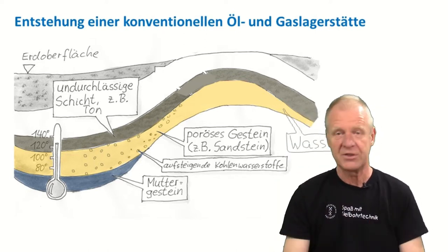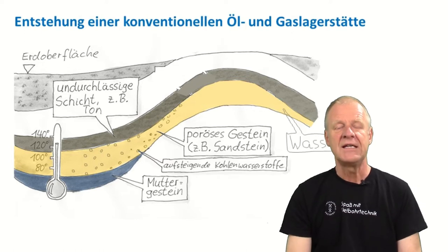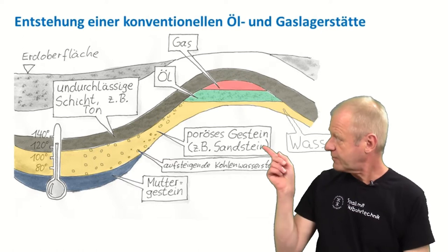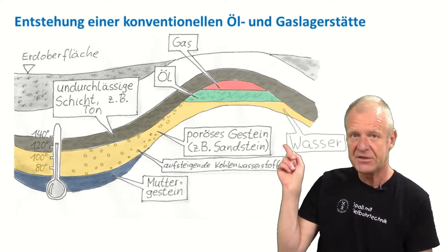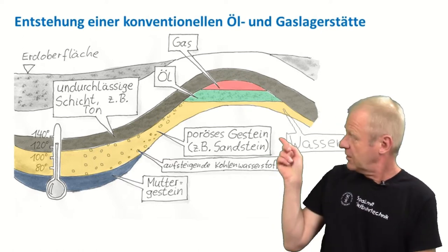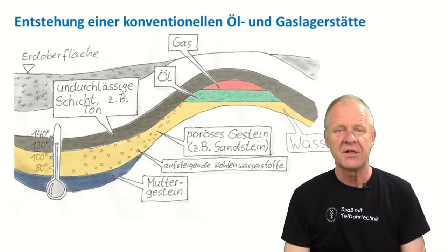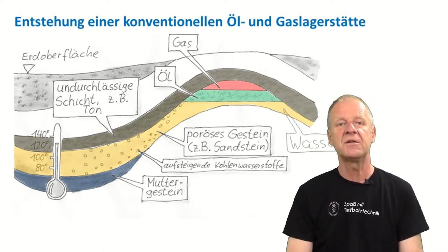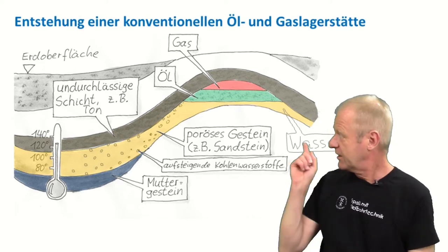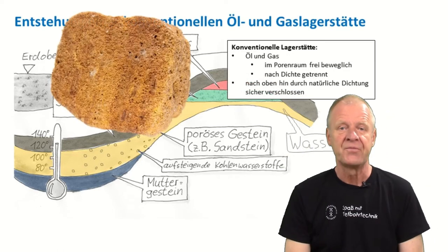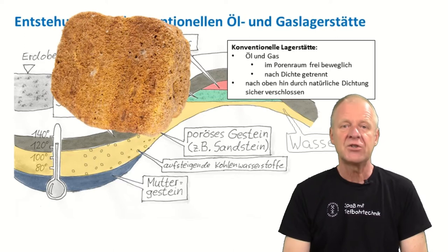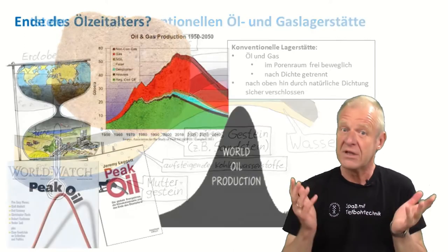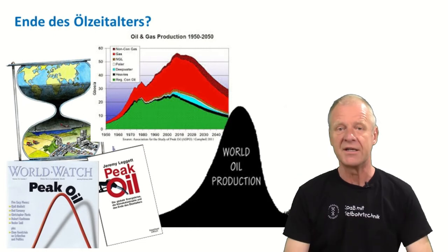However, sometimes along the way the hydrocarbons meet an impermeable layer or barrier — for example, a tight shield layer, like the one on screen shown in dark gray color. Since the hydrocarbons cannot pass this layer, they move along in an upward direction until they cannot rise any further. After millions of years, this accumulation is what we call a conventional reservoir. We have produced from such oil and gas reservoirs for over 150 years now, and we are realizing that such conventional reservoirs are slowly coming to an end.